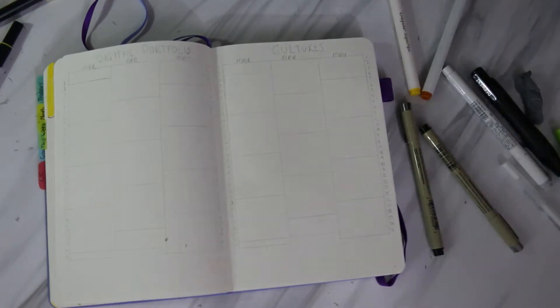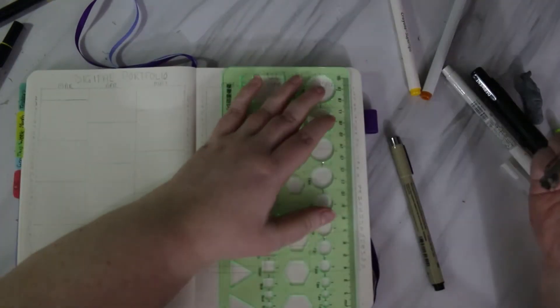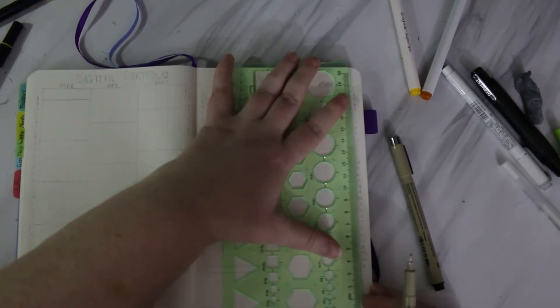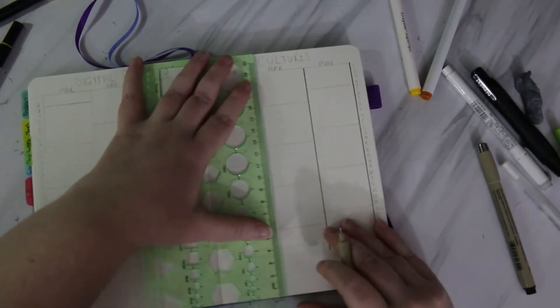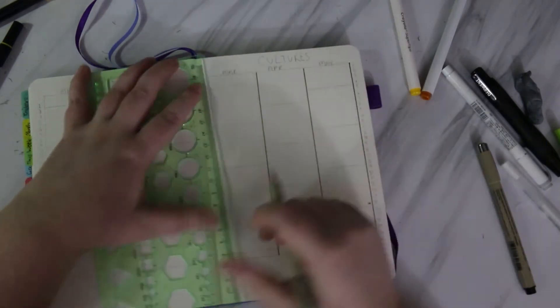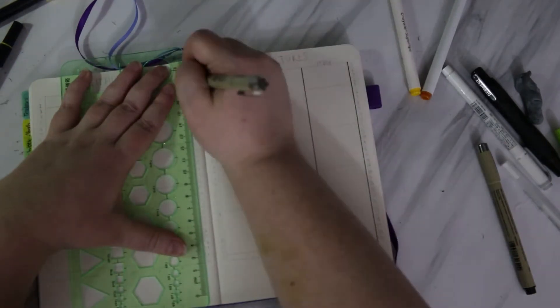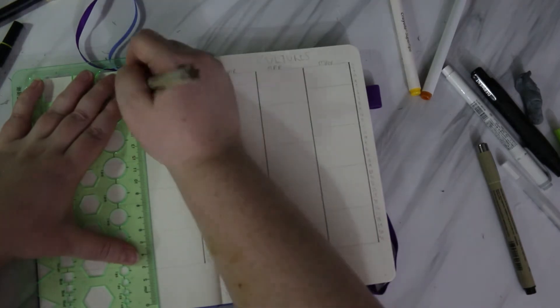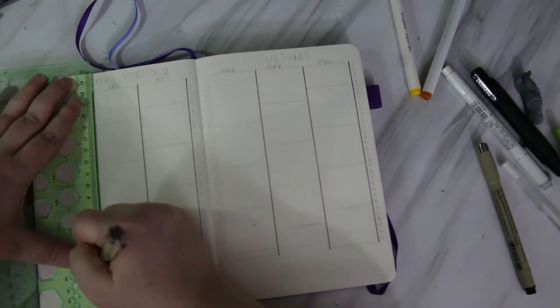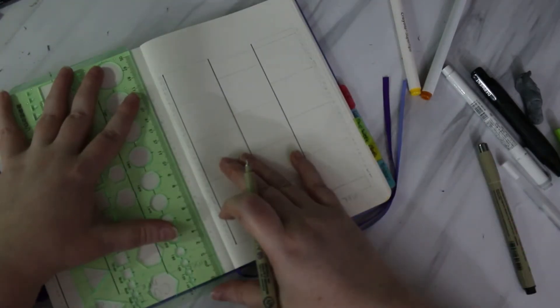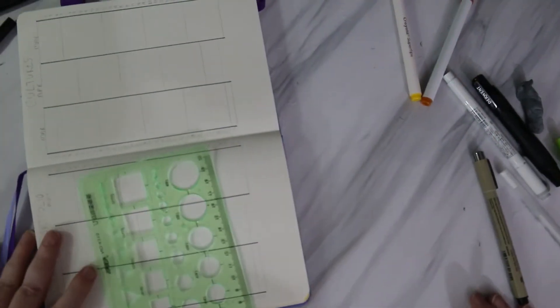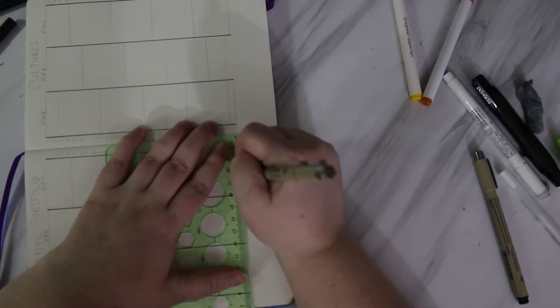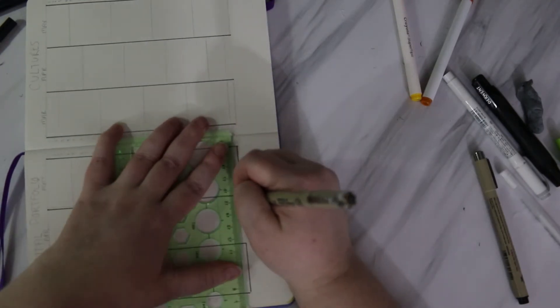This is the calendex for my two units. I used to put all this information on a whiteboard in my room, but now that I'm using my whiteboard for content creation, I've just put the calendex in my bullet journal.